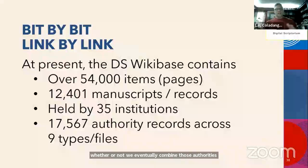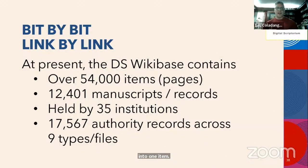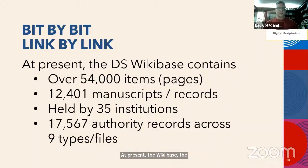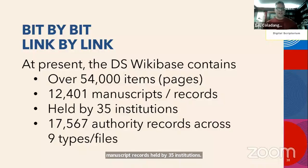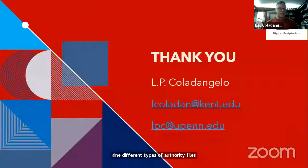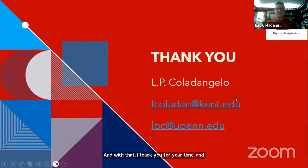Just to give you an idea of where we're at: at present the DS Wikibase contains over 5,400 items — those are Wikibase pages — which represent over 12,400 manuscripts held by 35 institutions. In total we manage 17,567 authority records across nine different types of authority files. And with that, I thank you for your time, and I hope we have a little bit of time for a couple questions.